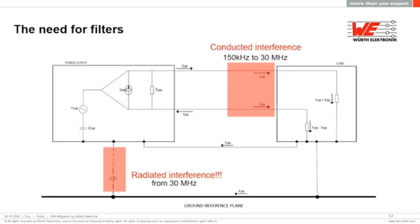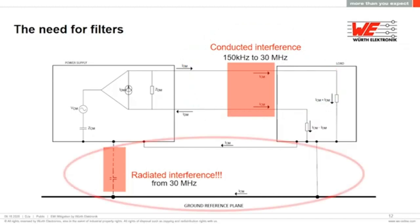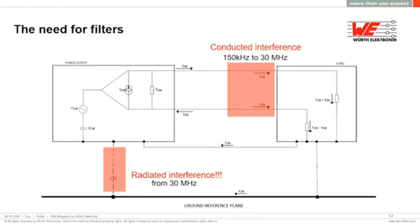EMI is defined as unwanted signals and can be in the form of conducted or radiated emissions. Conducted EMI is where the noise travels along electrical conductors, and radiated EMI is where the noise travels through the air as magnetic fields or radio waves. Conducted interference is measured from 150 kHz to 30 MHz, but for radiated it's over 30 MHz.